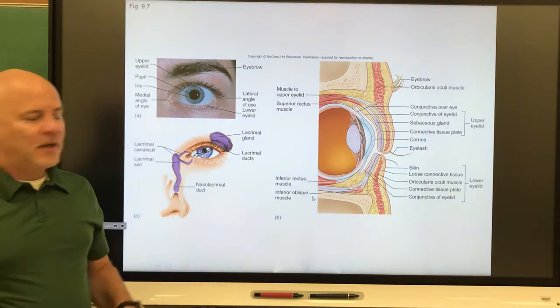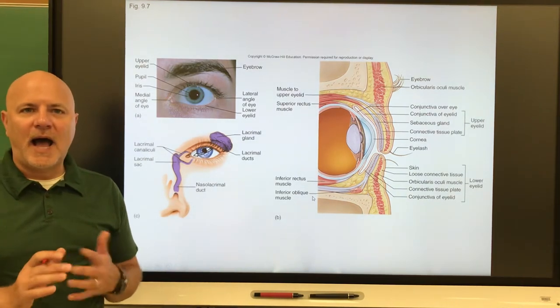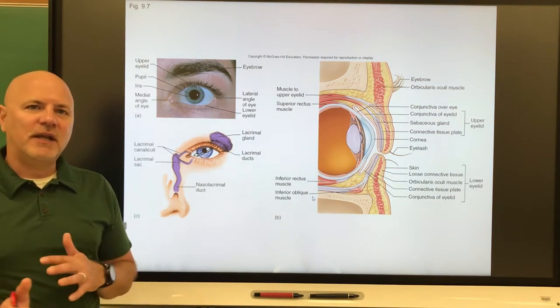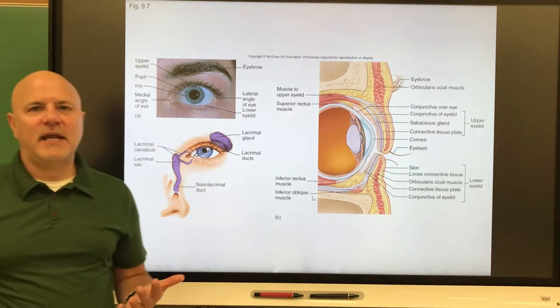Tears have two functions. They lubricate the eye and the eyelids, and they also have a cleaning function. They constantly are washing across, cleaning out our eye. They also contain an enzyme called lysozyme, which is an antibacterial agent.